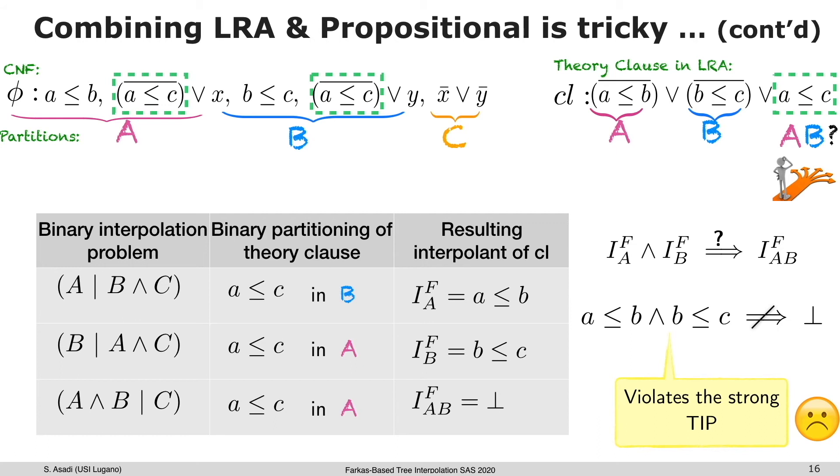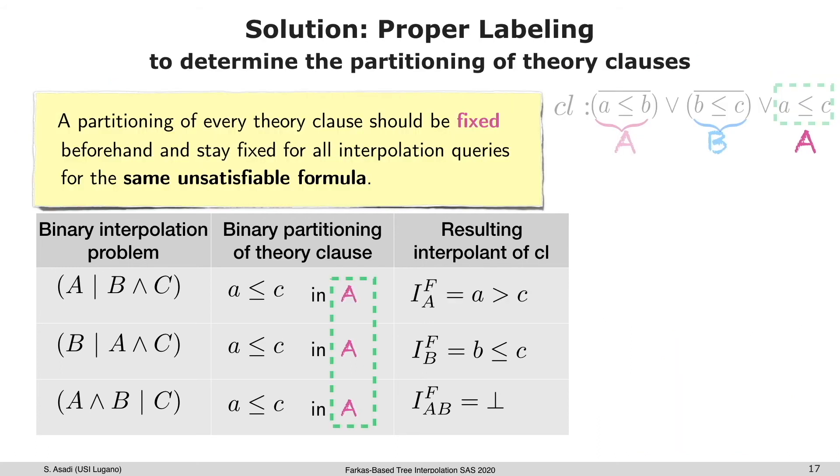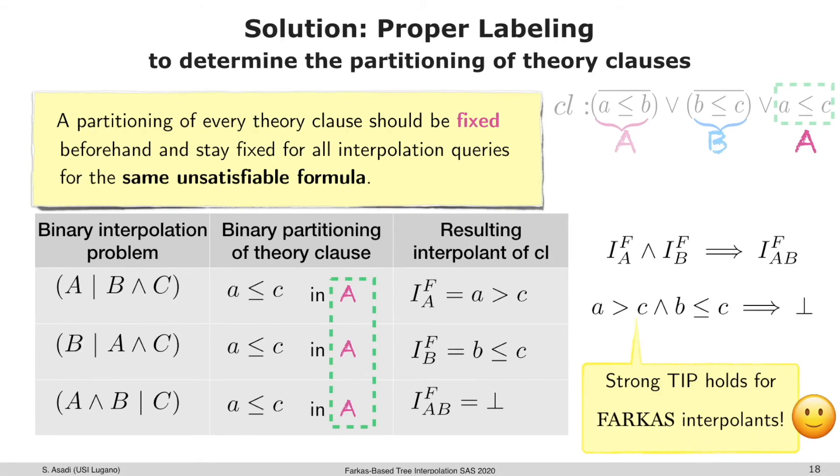Now let's see the solution, which is called proper labeling for determining the partitioning of theory clauses. The idea is: before we start computing interpolants for interpolation problems, we fix the partitioning of the theory clause, then we see the TIP will hold. The refutation should be properly labeled during this work to achieve our goal.